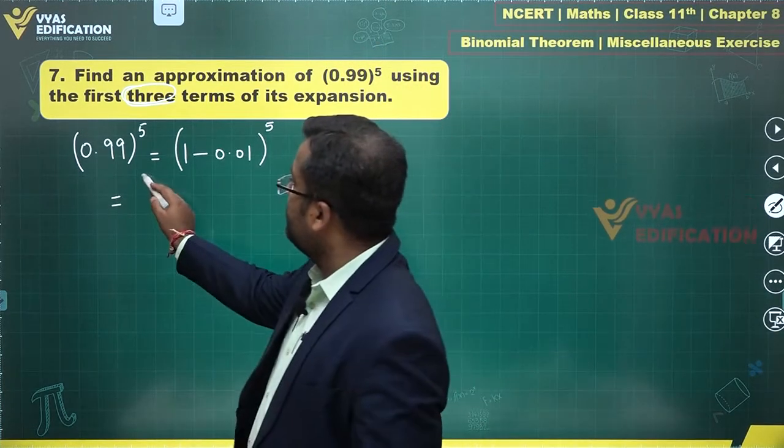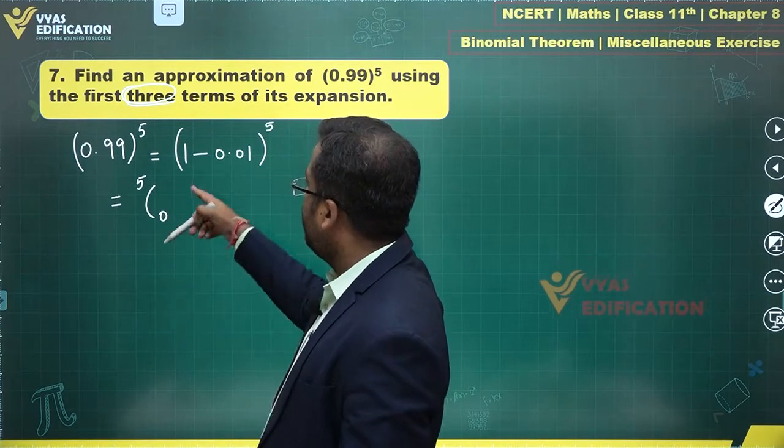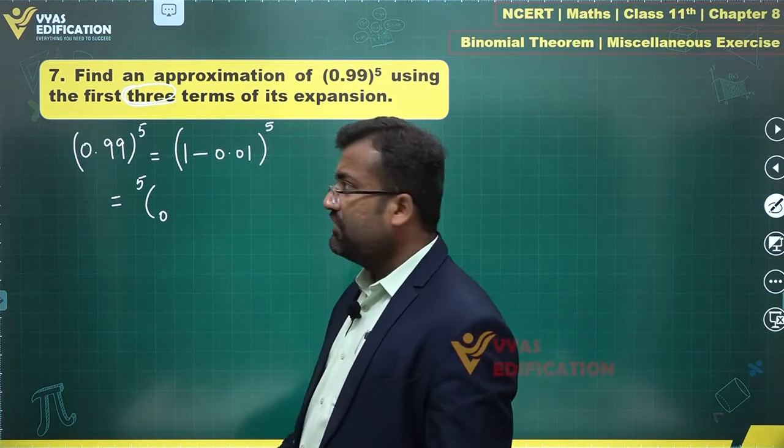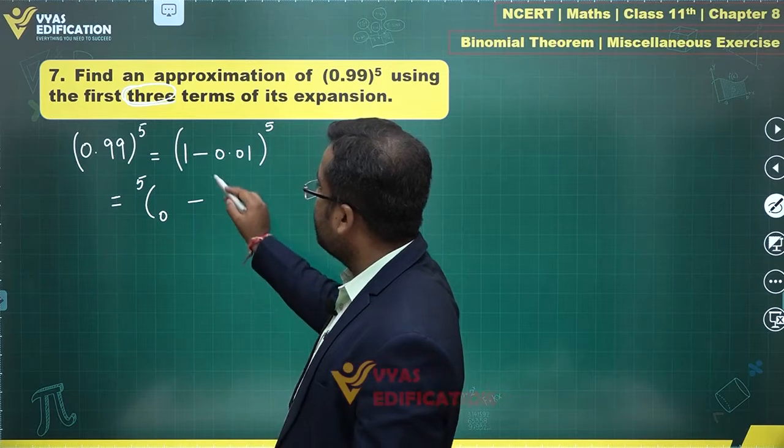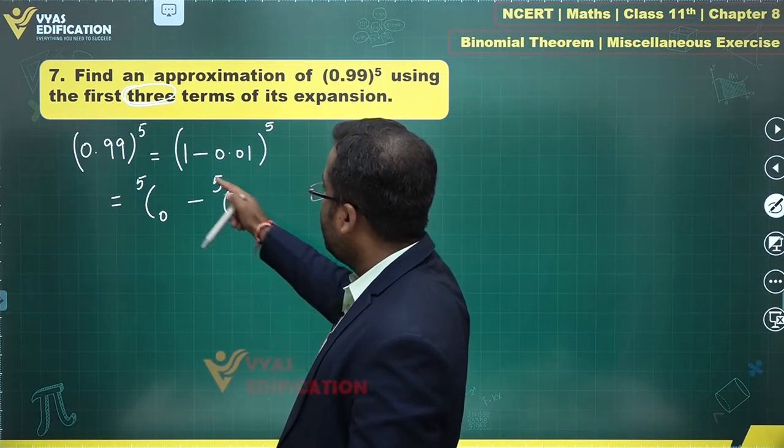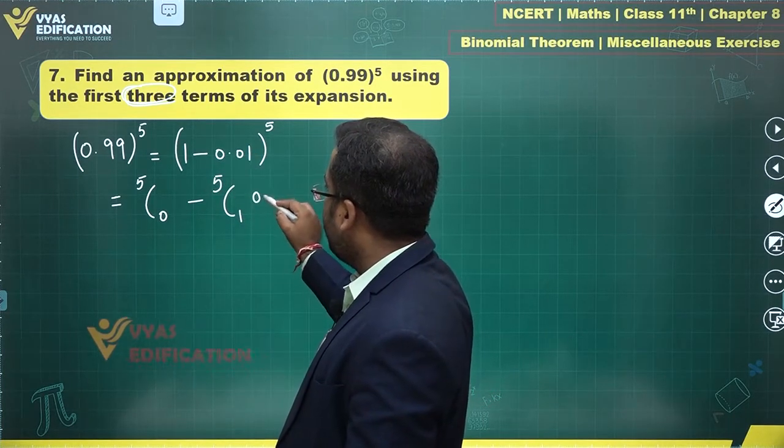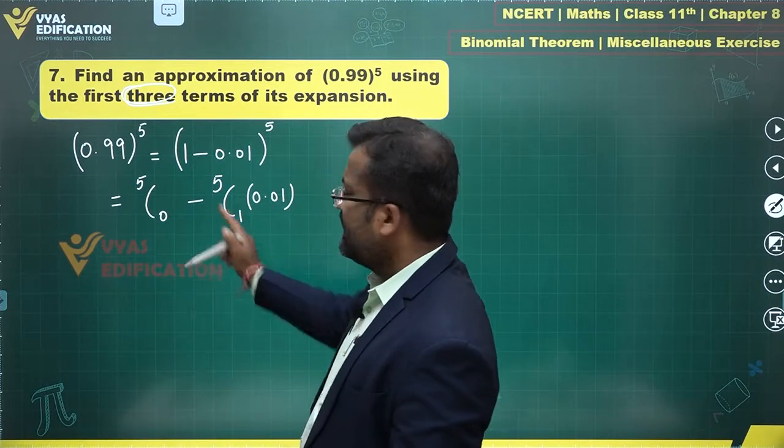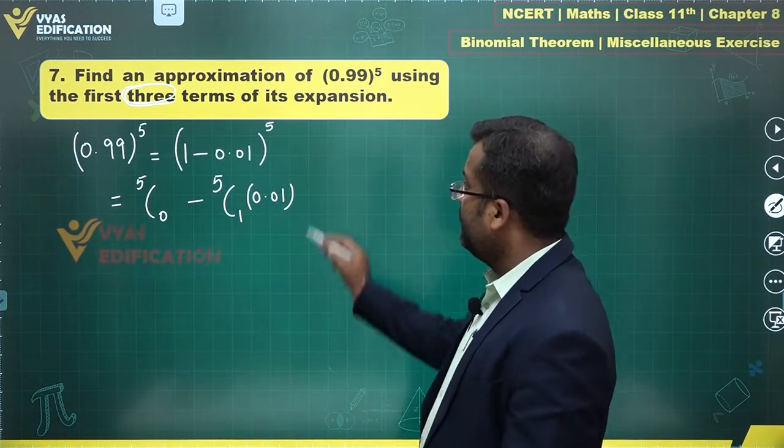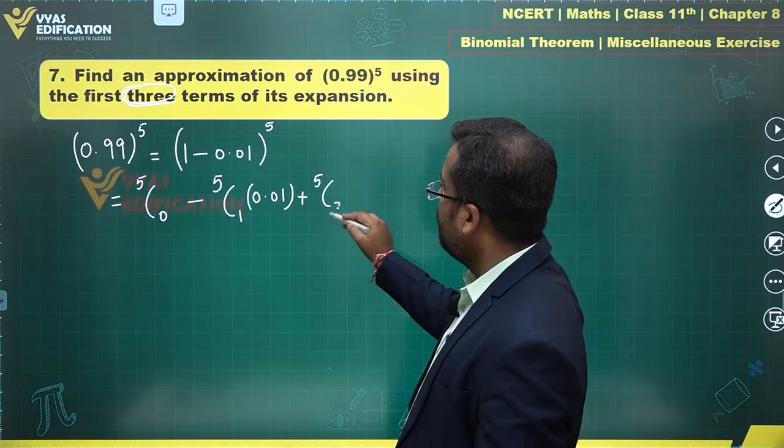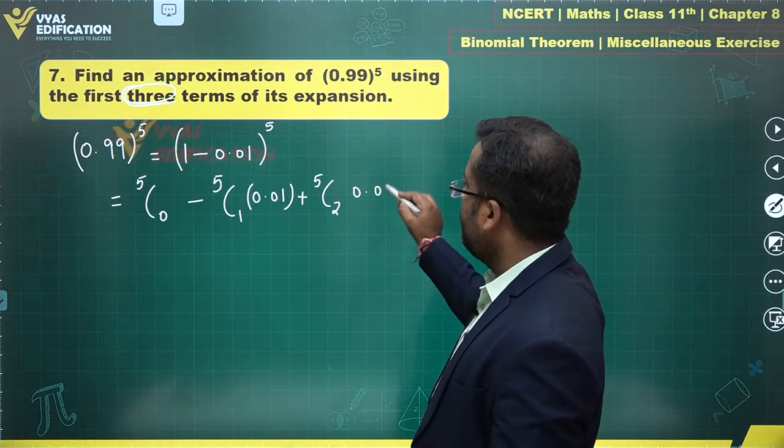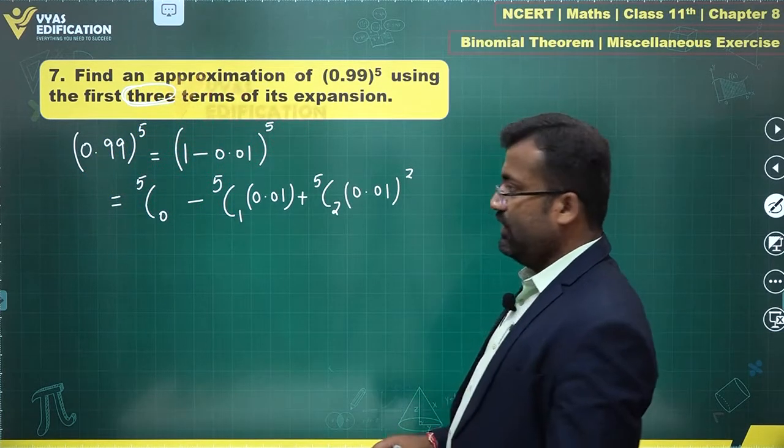This is 5C0. The first term is 5C0, 1 power 5, which is 1. Next, since there's a minus, this will become 5C1, 1 power 4, 0.01 raised to power 1. The minus has been taken care of. The next term will be 5C2 and 0.01 square.